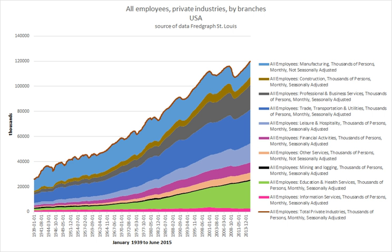Usually, either an employee or employer may end the relationship at any time, often subject to a certain notice period. This is referred to as at-will employment. The contract between the two parties specifies the responsibilities of each when ending the relationship and may include requirements such as notice periods, severance pay, and security measures.